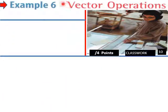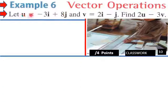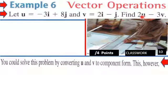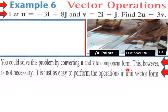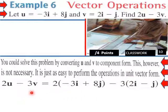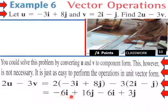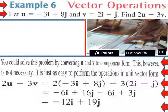Example 6, vector operations: let u equal negative 3i plus 8j and v equal 2i minus j. Find 2u minus 3v. You could solve this by converting u and v to component form, however it is just as easy to perform the operations in unit vector form. So 2u minus 3v equals 2 times u minus 3 times v. Distributing the multiplication, we end up with negative 6i plus 16j minus 6i plus 3j. Combining like terms, we end up with negative 12i plus 19j.